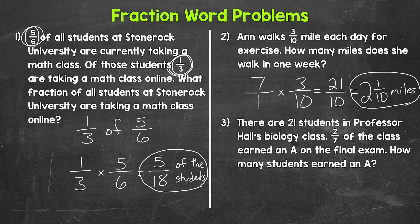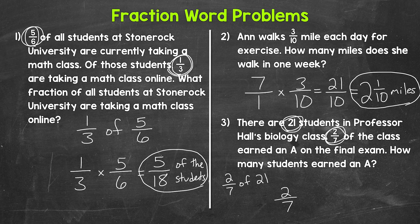Lastly for multiplication, let's move on to number three: there are 21 students in Professor Hall's biology class. Two-sevenths of the class earned an A on the final exam. How many students earned an A? We need to find two-sevenths of 21 — so two-sevenths times 21. Writing 21 over one, two times 21 gives us 42.